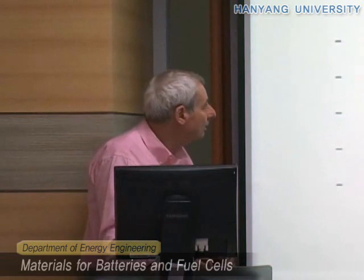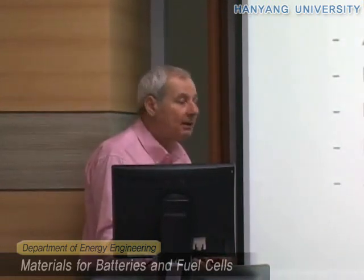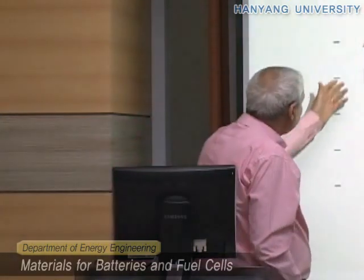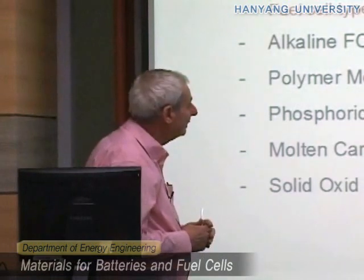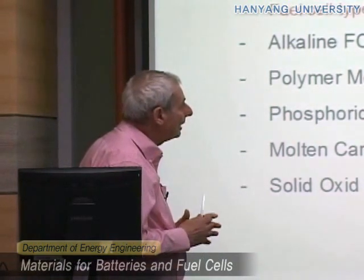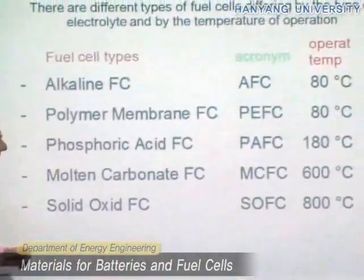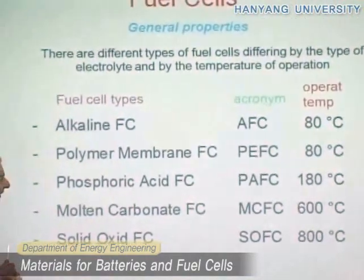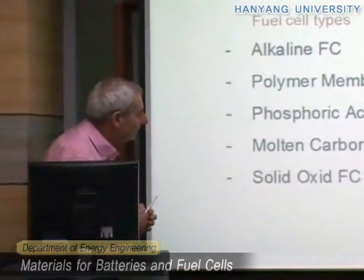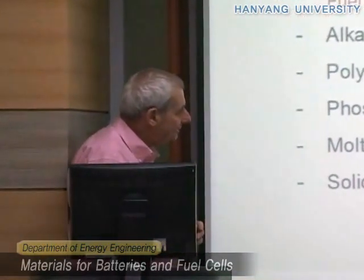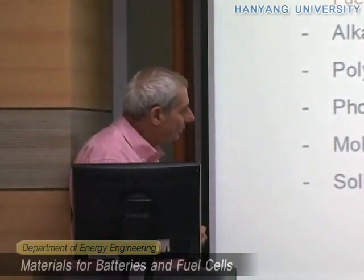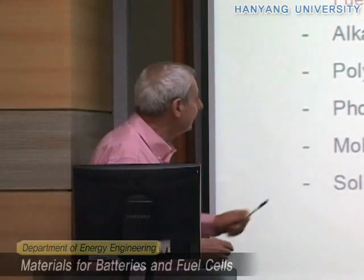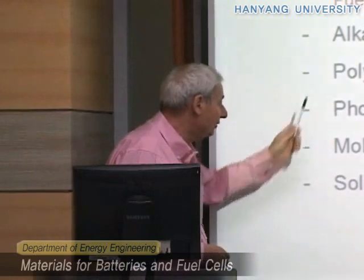We have various types of fuel cells, and they vary according to the type of electrolyte they use and to the operation temperature. We have the alkaline fuel cell (AFC), which uses an alkaline electrolyte and works around 80°C. Then there is the polymer membrane fuel cell (PEMFC), also around 80°C. Phosphoric acid fuel cell (PAFC) at 180°C. Molten carbonate fuel cell (MCFC) at 600°C. And solid oxide fuel cell (SOFC) at 800°C.